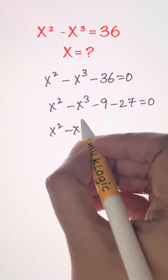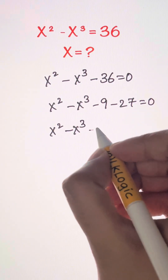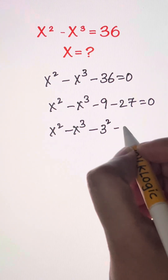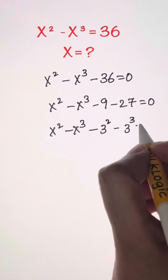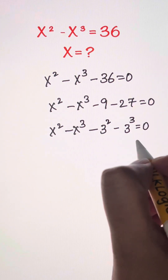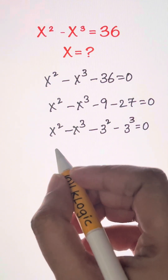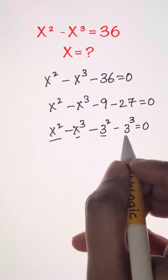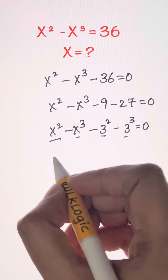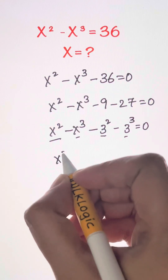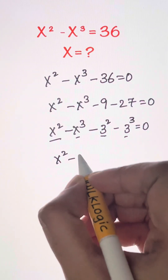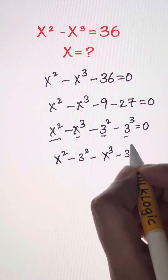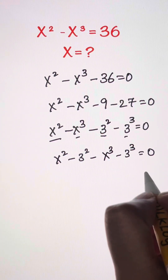x squared minus x cubed — 9 can be written as negative 3 squared, and this can be written as negative 3 cubed, equal to 0. We have x squared and squared terms, cube and cubed terms. Let us combine them: x squared minus 3 squared minus x cubed minus 3 cubed is equal to 0.